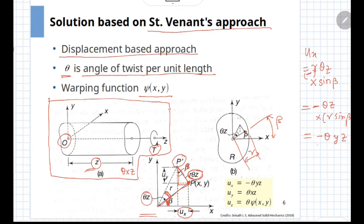That is the value of ux in terms of theta and z. Similarly, uy can be shown to be equal to theta times x times z. And uz is defined as theta multiplied by warping function. That is the assumption made in this particular approach.